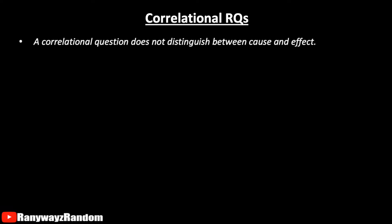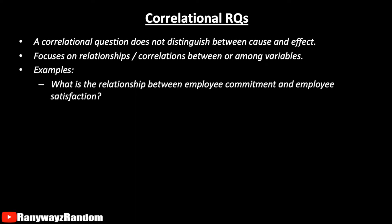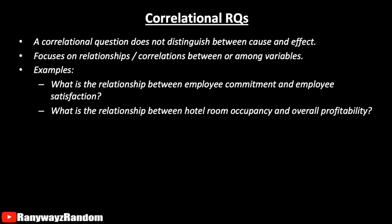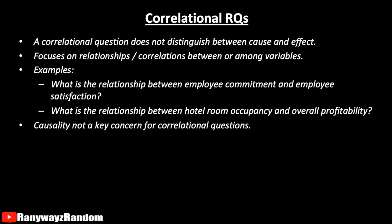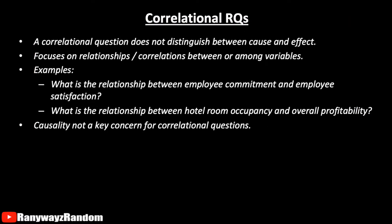Now let's take a look at correlational questions. A correlational research question typically does not distinguish between independent variable and dependent variable. Rather, it focuses on the relationship or correlation between or among certain things. For instance, what is the relationship between employee commitment and employee satisfaction? Or what is the relationship between hotel room occupancy and overall profitability? A correlational question does not involve implicating one specific variable as the predictor and the other as the outcome. Maybe commitment influences satisfaction, maybe satisfaction influences commitment, or maybe there is a bidirectional relationship, or maybe the relationship is simply the result of a third predictor. A correlational question does not assume causality, only correlation.